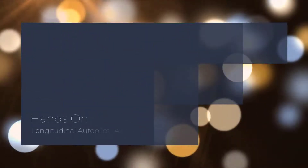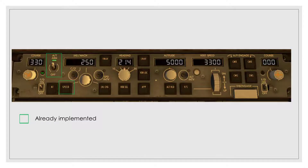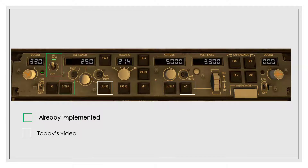Hello guys and welcome to yet another video in the tutorial series of the autopilot project. Today we continue with longitudinal autopilot, and exactly we are implementing the altitude functions. Let's recap what we have done so far: in the longitudinal autopilot we developed the pitch controller and damper, which is invisible to the pilot, but we have also developed the airspeed control using auto throttle. Today, based on the pitch controller, we are going to make altitude and vertical speed controller.